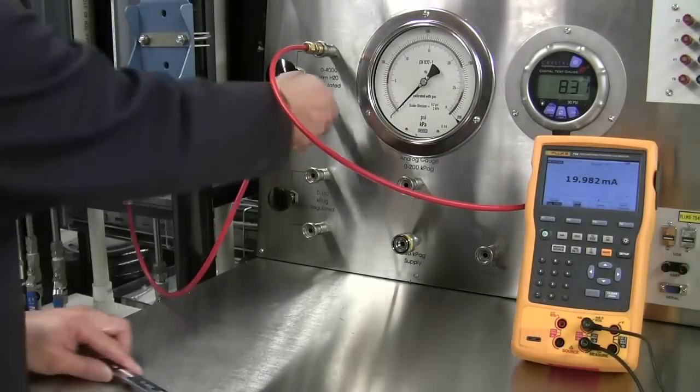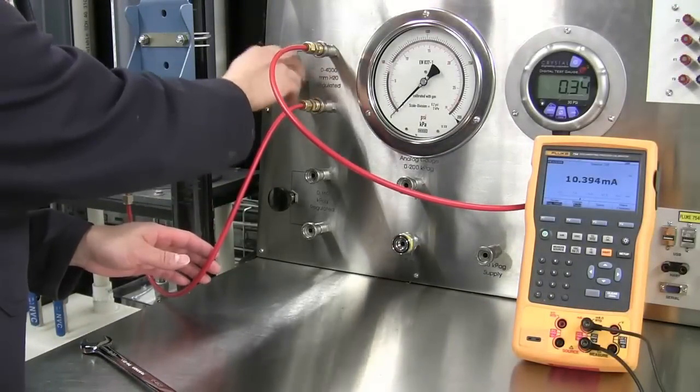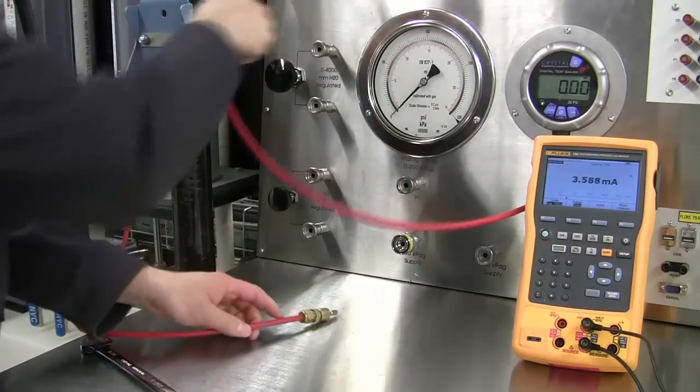When you are done calibrating the transmitter, back off the regulator until about 0 kPa and disconnect the hoses starting at the regulator end.